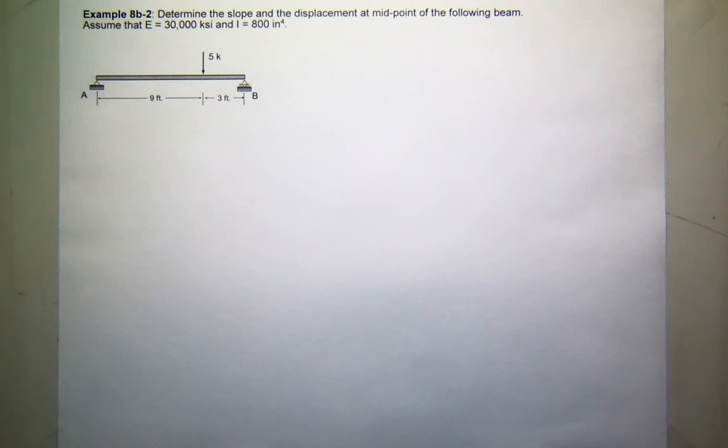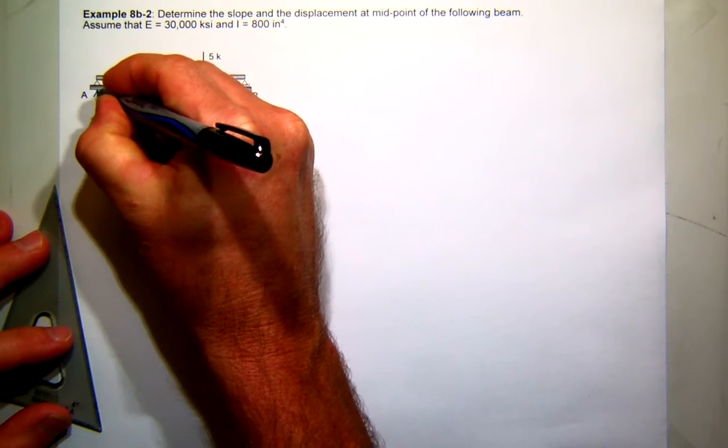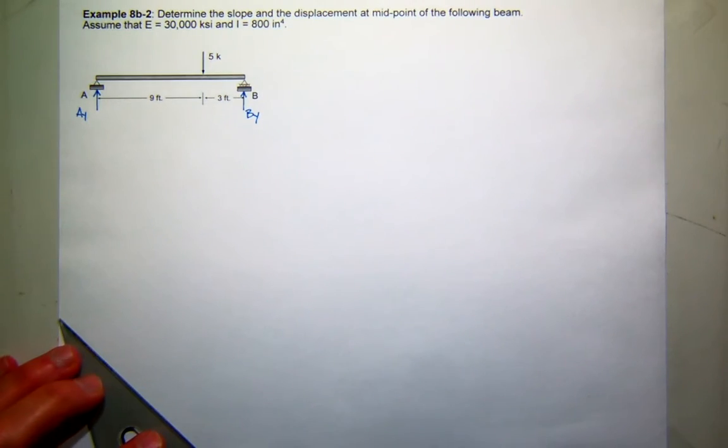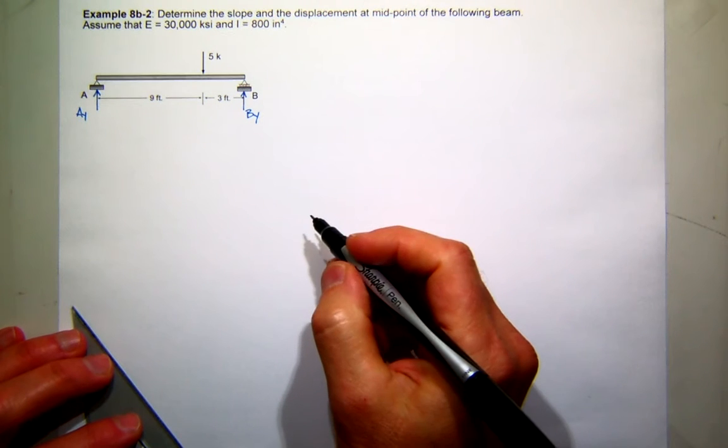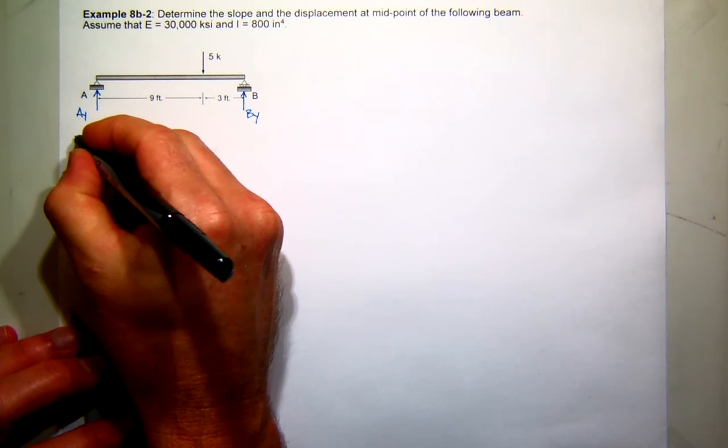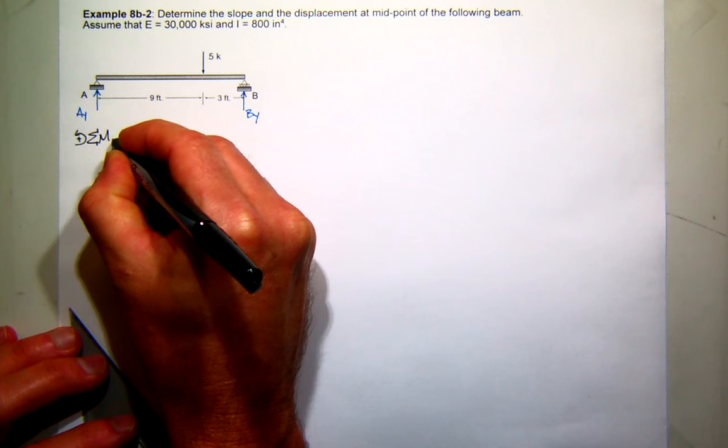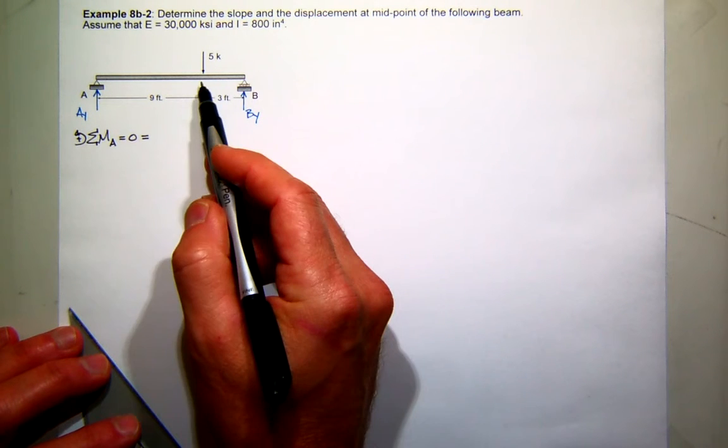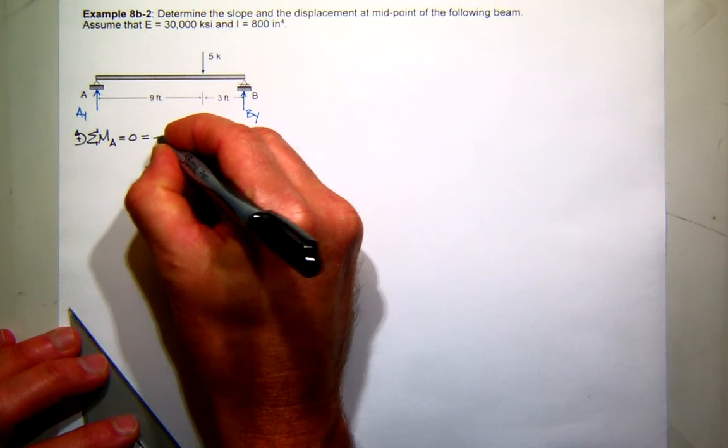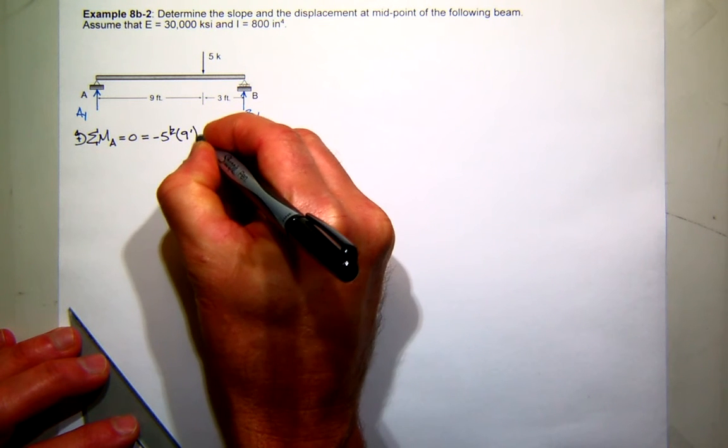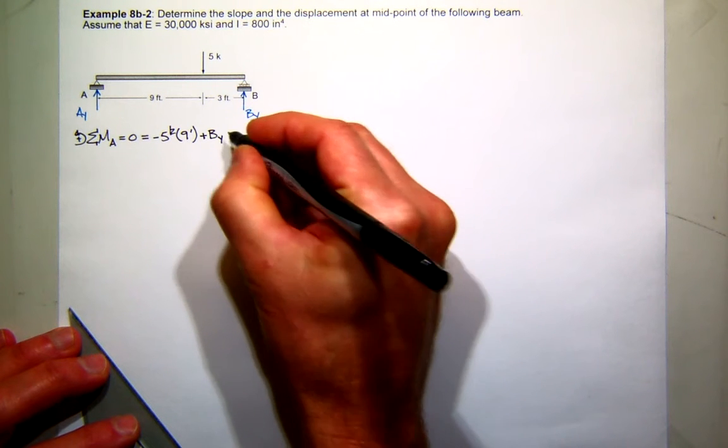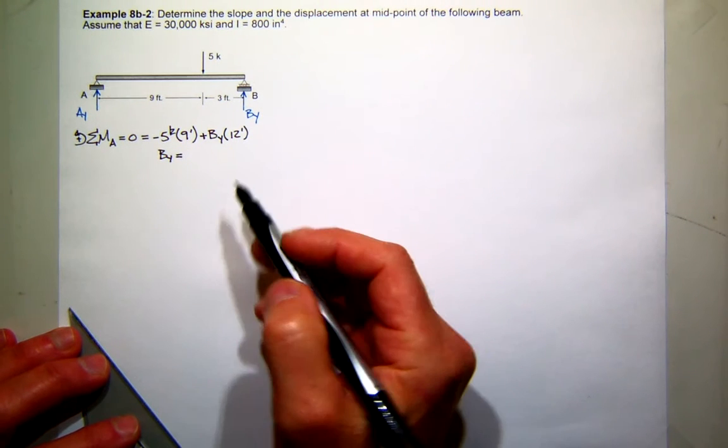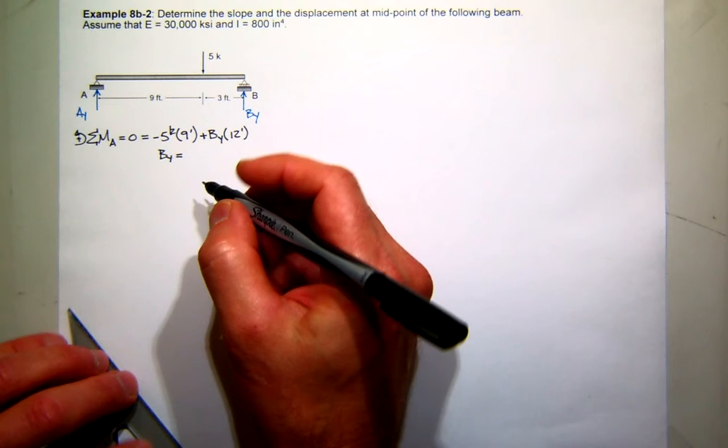The first thing we need to do for conjugate beam is find the moment. So to find the moment diagram, we will need our reactions. I'm going to assume AY and BY are acting up, and let's find those. I'm going to sum my moments at A using right-hand rule for my sign convention. Summing moments about A, this 5 kip load creates negative moment. So I have 5 kips times a moment arm of 9 feet, and then BY will create positive moment about A, BY times a moment arm of 12 feet. So what is BY? 45 divided by 12, that's 3.75.